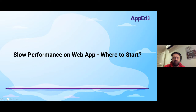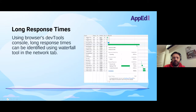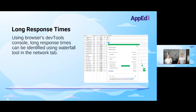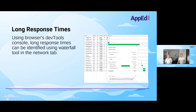Right, so web app performance — where to start? You can start by identifying long response times using the browser's built-in DevTools console, accessible by pressing F12 on your keyboard. Navigate to the Network tab and you'll see a waterfall graph. Look for the longest execution times as shown in the screenshot. Though there's not much you can fix in the frontend alone, it's a good hint as to where to start your improvement.